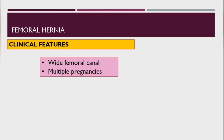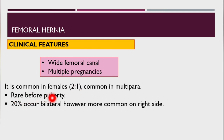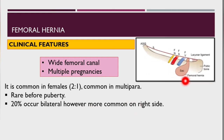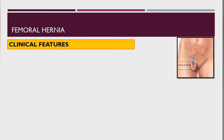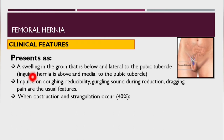Regarding clinical features: femoral hernia is caused by a wide femoral canal and multiple pregnancies, and is most common in females because of a wider pelvis. Before puberty in females it is very rare, and it can occur bilaterally — however it is more common on the right side. The femoral hernia presents as a swelling in the groin below and lateral to the pubic tubercle, with the femoral vein and lacunar ligament visible on the lateral side.